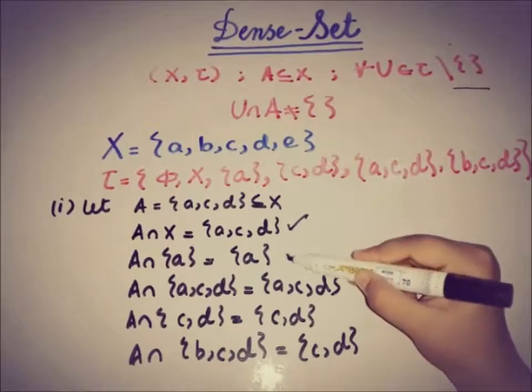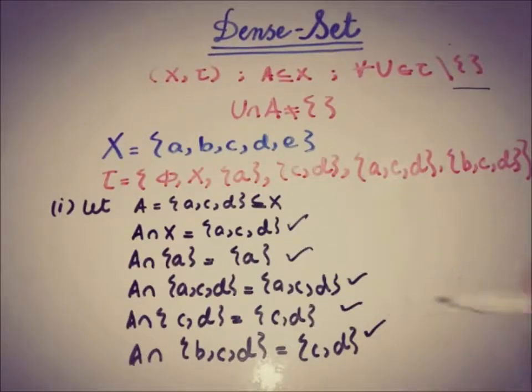So all of the intersections are non-empty. This implies that A is a dense set.